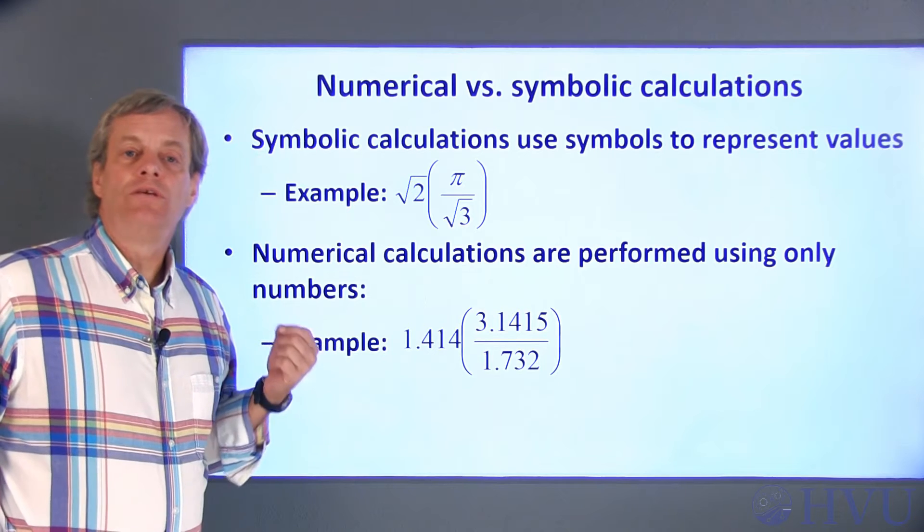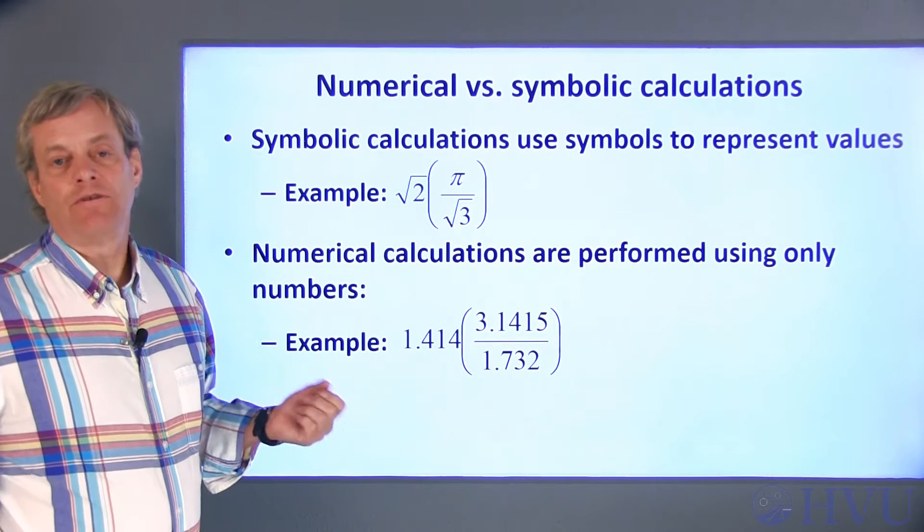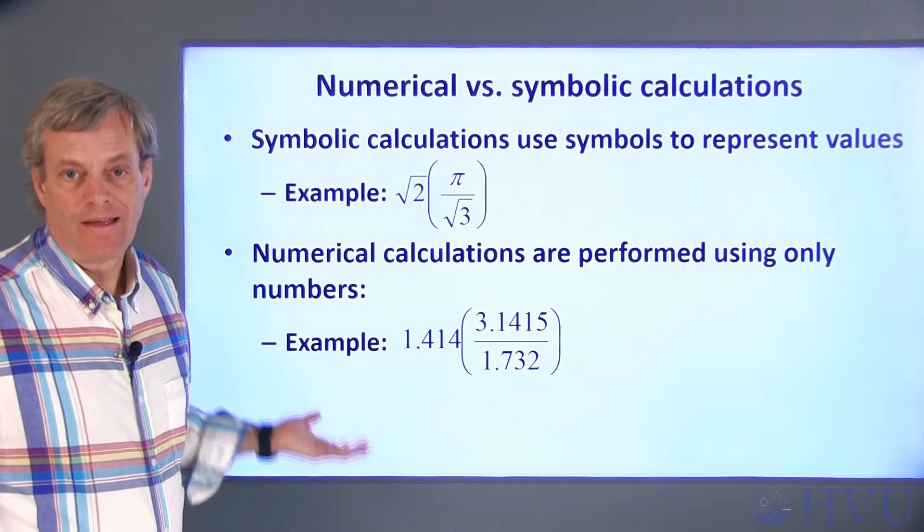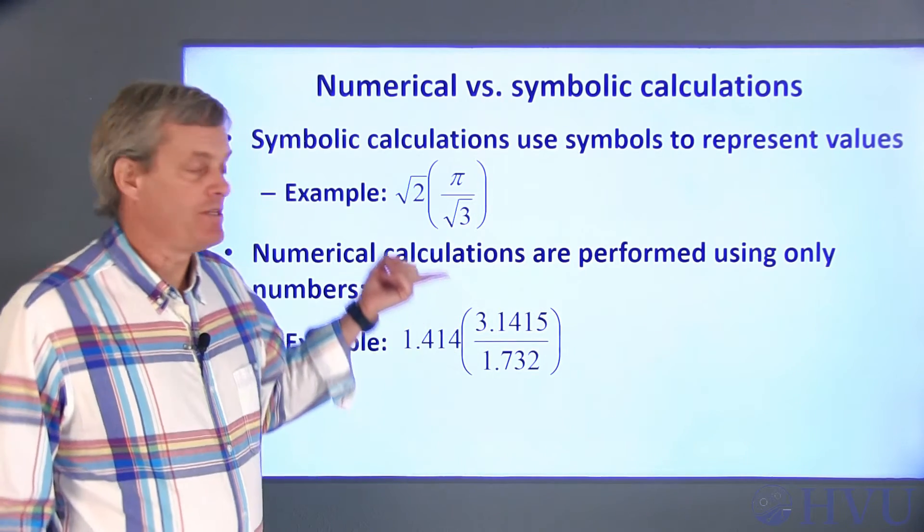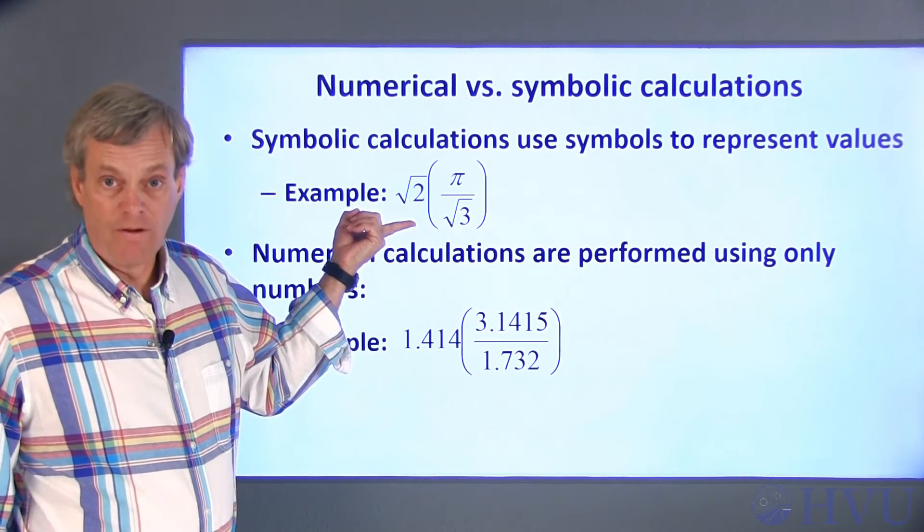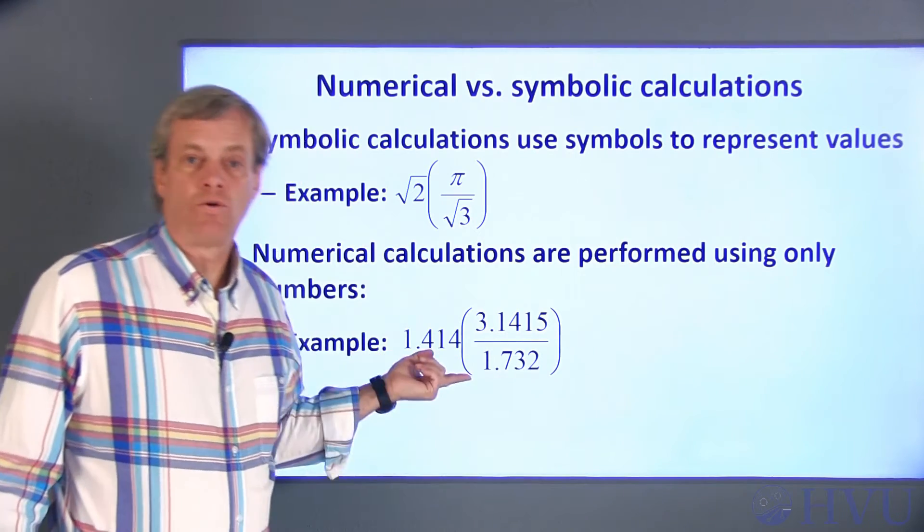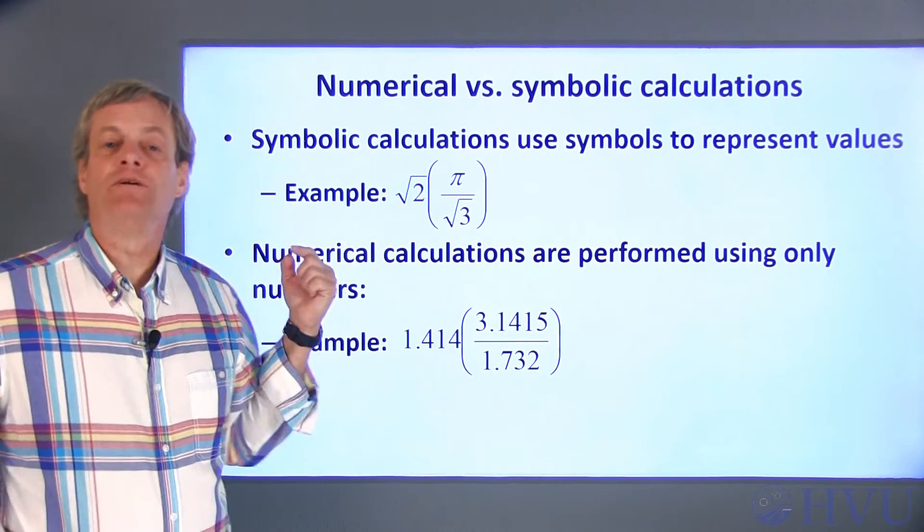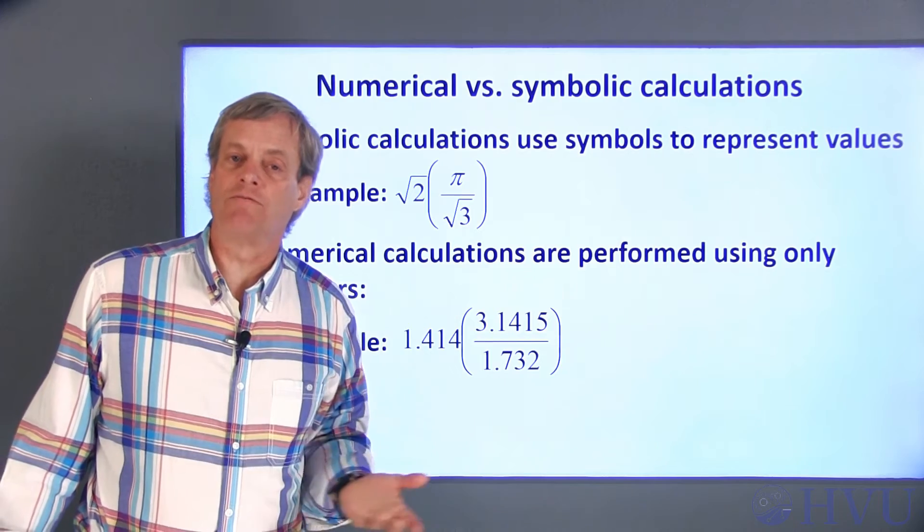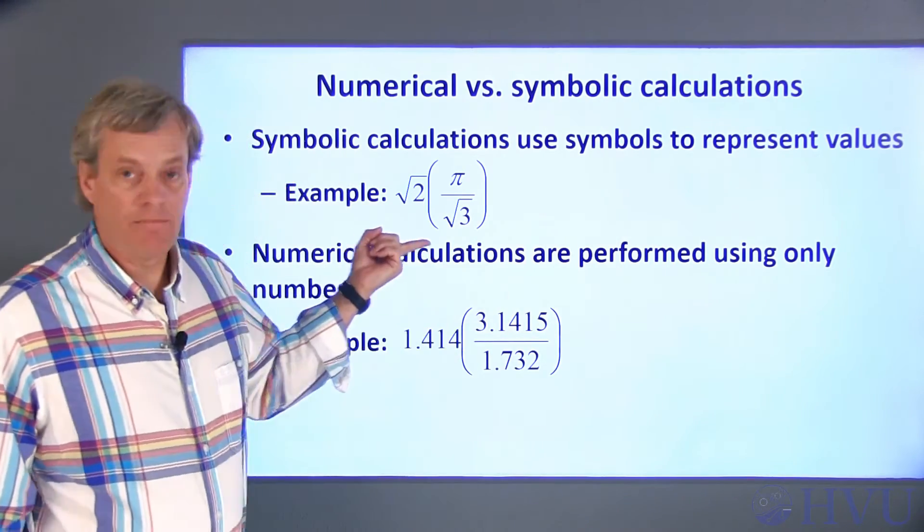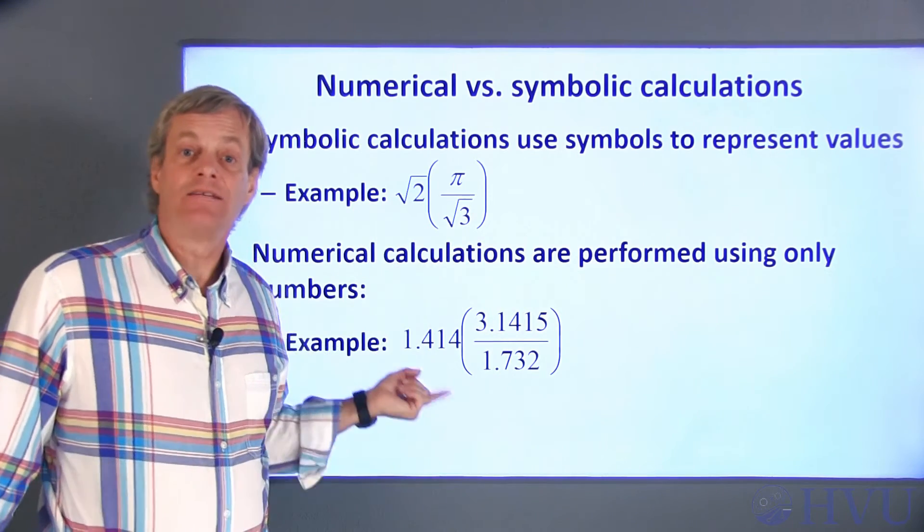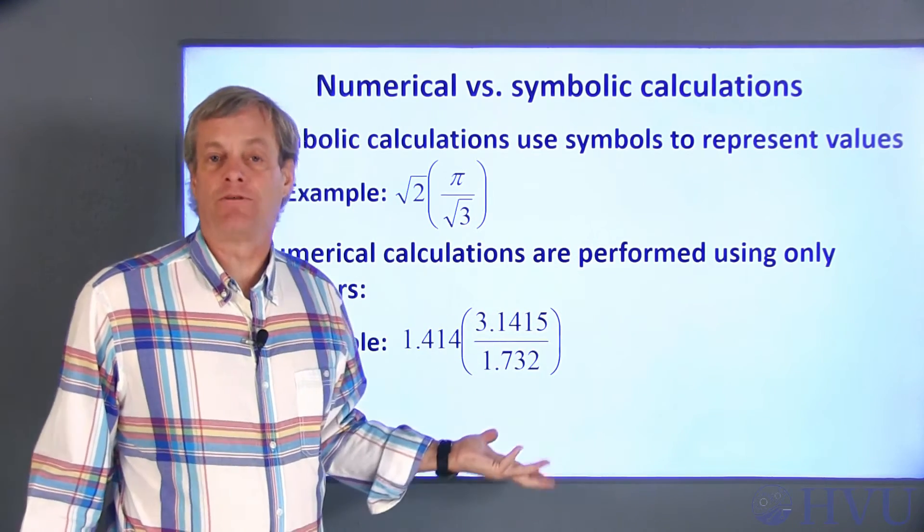Numerical calculations only use decimal numbers to represent values in a mathematical expression. For example, this expression might be a numerical representation of the previous expression. All the numbers here correspond to the symbols here, but they've been truncated to a finite number of decimal places. The numerical expression here isn't exactly the same as the symbolic expression above, since an infinite number of terms in the numbers are missing.